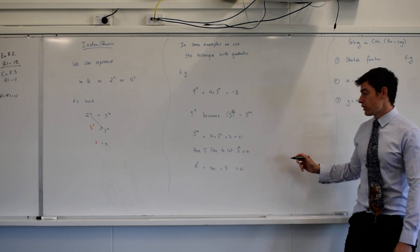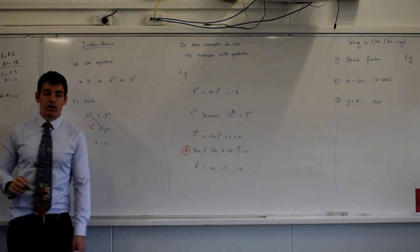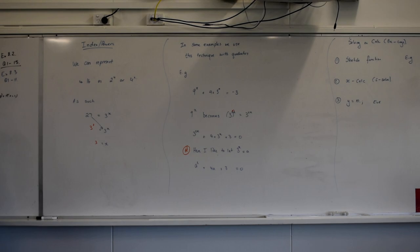All I've done is taken 3 over the other side. I like to do this but you don't have to. This is optional, this step. I like to do this because it turns it into a nice gentle quadratic. So I let 3 to the power of x equal a, which means I've got a squared plus 4a equals 3.